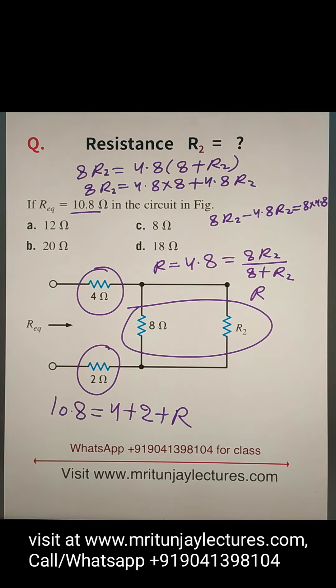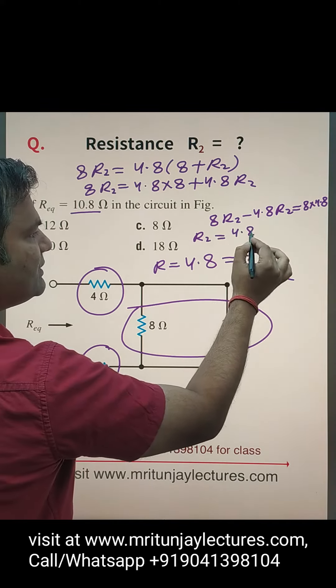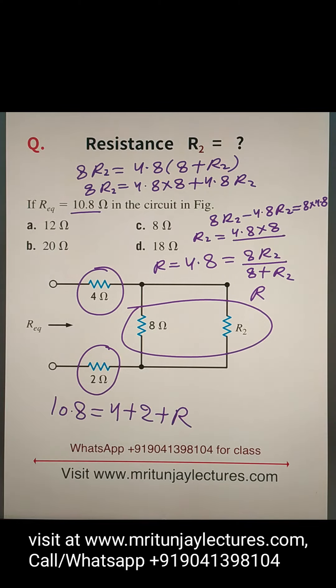So R2 is how much? 4.8 into 8 divided by 8 minus 4.8. 8 minus 4.8, with the help of calculation, 8 minus 4.8 is 3.2.